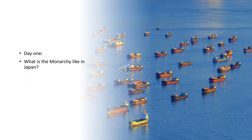On day one of week two, we are going to introduce what the monarchy is like in Japan. The monarch in Japan is known as the emperor. He is the head of a constitutional monarchy. The emperor is regarded as the highest authority in the Japanese religion of Shinto and is said to be a descendant of the sun goddess Amaterasu. The monarchy in Japan is known as the oldest monarchy in the whole world.